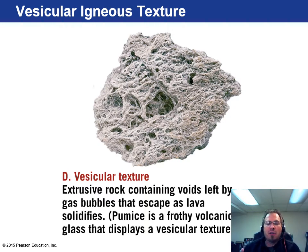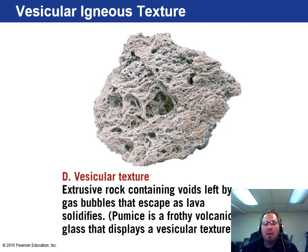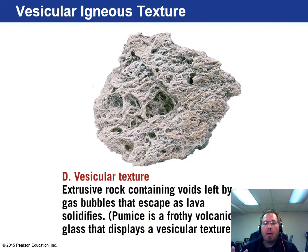Vesicular texture means bubbles — vesicles is another fancy way of saying bubbles. These are extrusive rocks where all the gas has been expelled as lava. Like pumice — one of the lightest rocks you'll ever find — it can actually float on water because it's full of air bubbles. That's what we call vesicular textures, and it actually allows pumice to float.